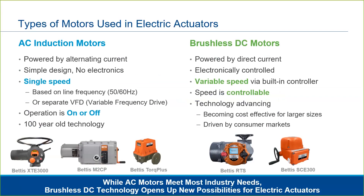DC brushless motors are powered by direct current. This simply means that DC current is used internally by the motor controller. The actuator itself can still accept line power in either three-phase AC, single-phase AC, or DC. DC brushless motors are controlled by a motor controller, which takes the power signal and varies both frequency and amplitude of the current to the motor, thus providing the ability to adjust the speed and torque of the actuator output.